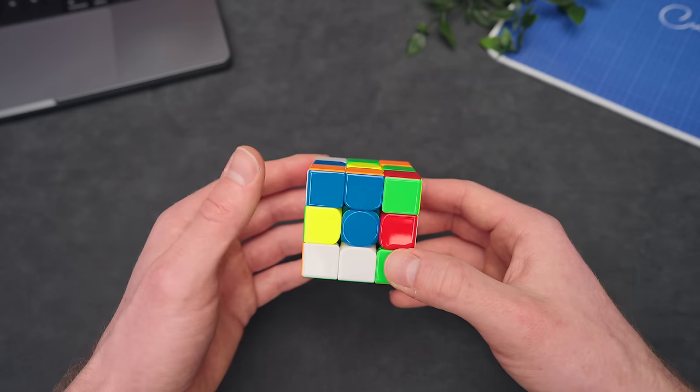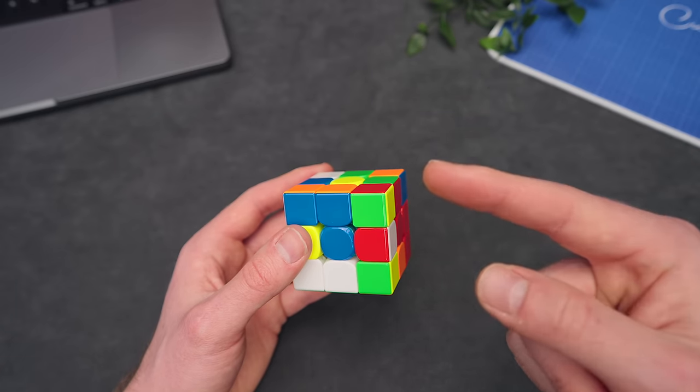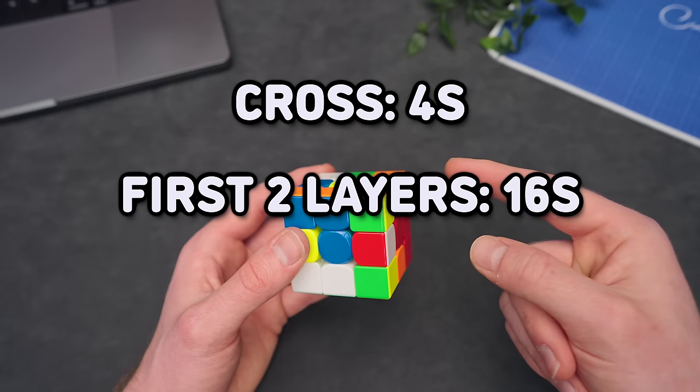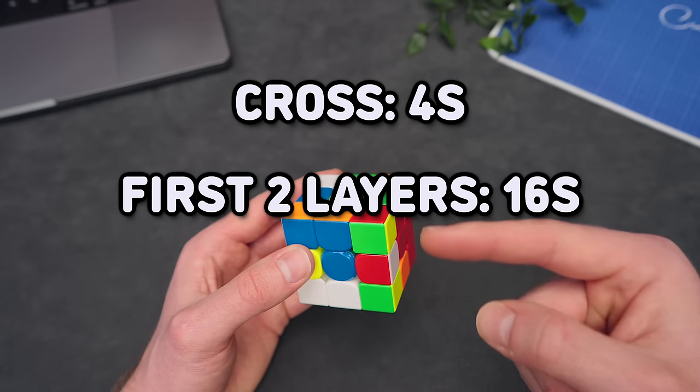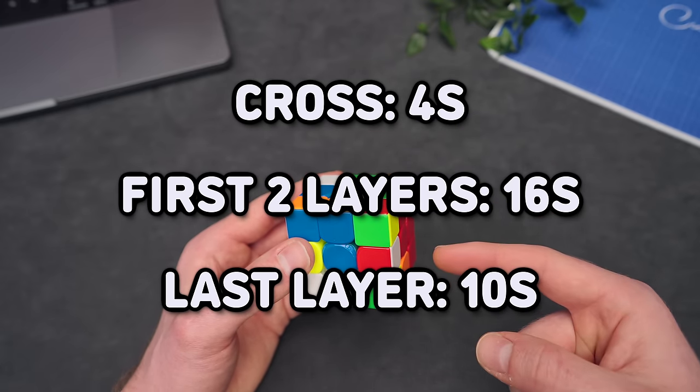Now, using the CFOP method, I suggest aiming for these splits, which are 4 seconds for the cross, 16 seconds for F2L, or 4 seconds for each pair, and then a total of 10 seconds for the last layer.